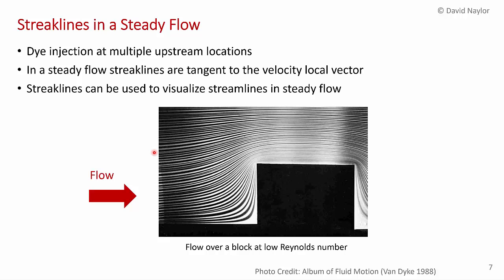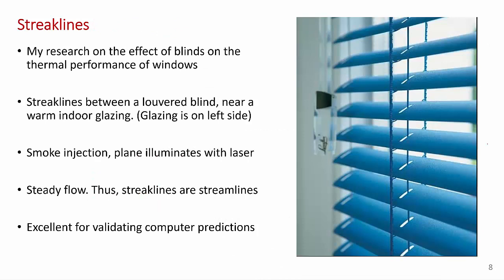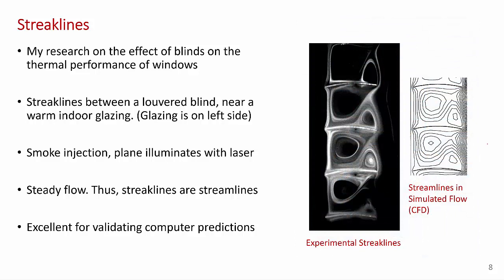A few years ago, I used streak lines in my own research. We were looking at the effect of Venetian blinds on the thermal performance of windows and their impact on the energy performance of buildings. This is a streak line image of a one inch Venetian blind with the louvers in the open position. And what you're seeing here is the louvers. These are the louvers here. That's a one inch louver and you're seeing them edge on.